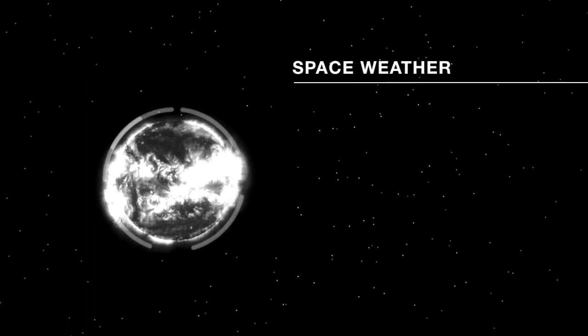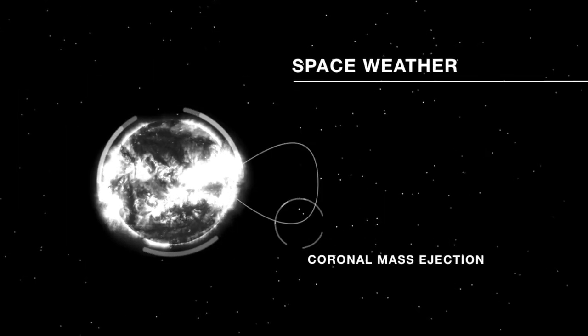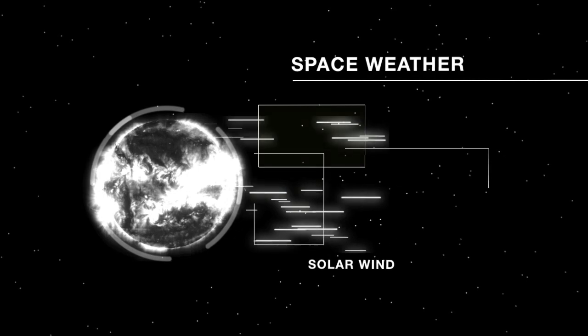The Sun puts out what we call space weather. Space weather causes problems with our satellites, our astronauts, our communication systems here on Earth, and our navigation systems.